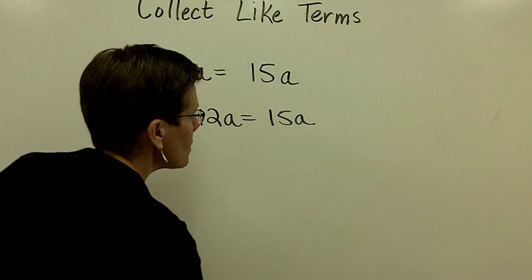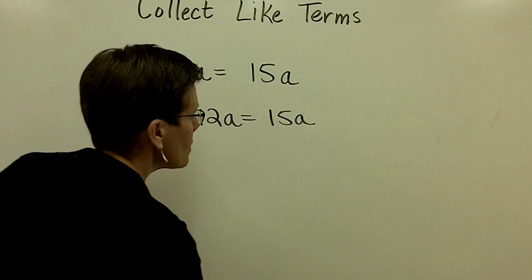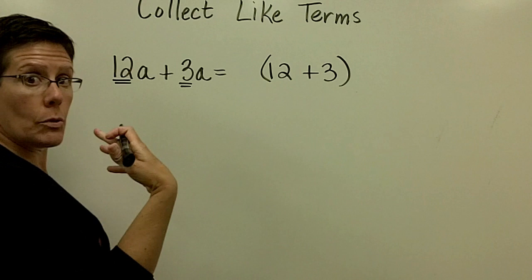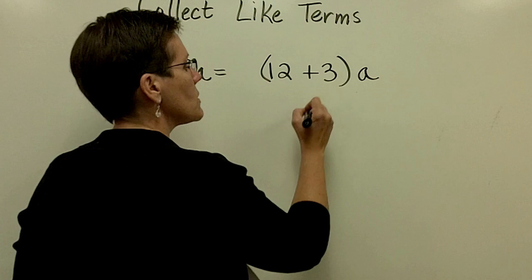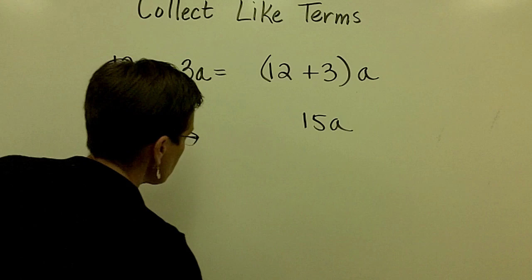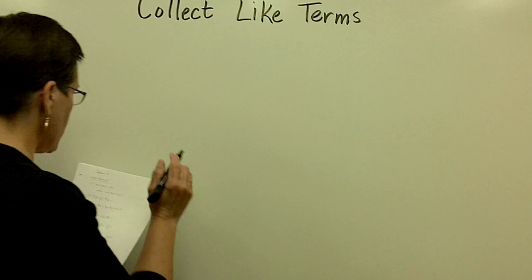There is no need to write this out in any greater fashion than this. Often a book will express this problem by showing parentheses around the 12 and 3 with the a on the outside to show that 12 plus 3 gives you that 15a, kind of showing the distributive property in reverse. Really not necessary to go through all that work. Just combine your like terms by adding or subtracting their coefficients.